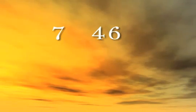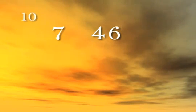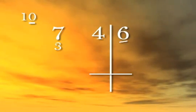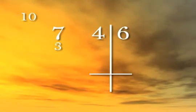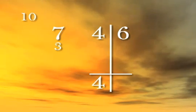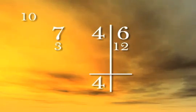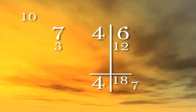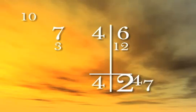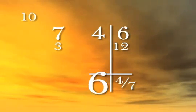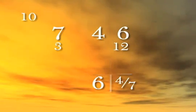Divide forty-six by seven using base division. Seven is close to ten, so we'll use ten as our base. The difference is three. Ten has one zero, so we'll separate out one digit on the right side. Bring down the four. Four times three is twelve — write the entire amount twelve in the remainder column. Adding six to twelve, we get eighteen, so we have four and eighteen sevenths. Seven goes into eighteen two times with a remainder of four, so carry two to the left. Four plus two is six, so the answer is six and four sevenths.